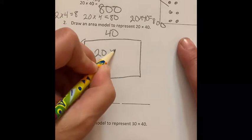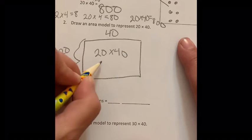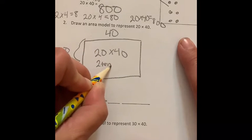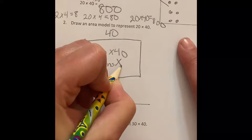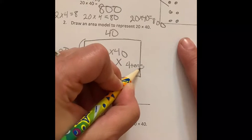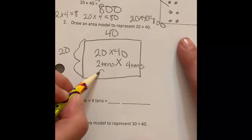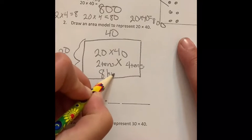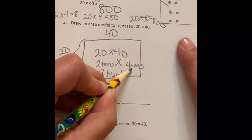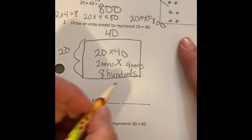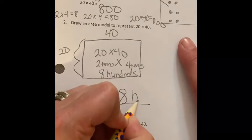20 times 40. Well, that's 2 tens times 4 tens, and that's going to get me 800.